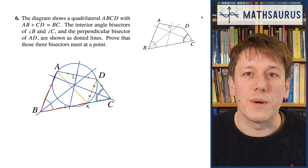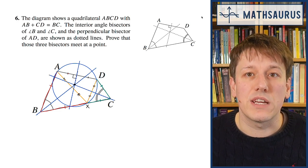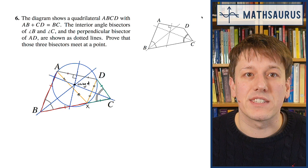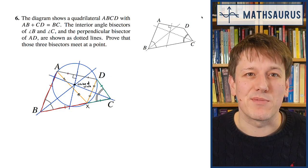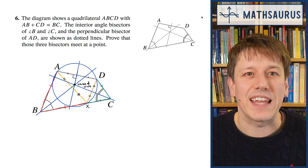We've proven what we need to here, which is that these three lines do all go through the same point, and they're exactly the center of this circle. This point at the center is sometimes called the circumcenter of the triangle ADX.